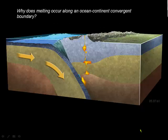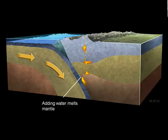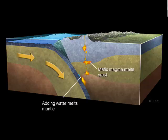Why does melting occur along an ocean-continental convergent boundary? Well, of course, same thing. You add water, water melts the mantle. Also, the mafic magma that comes out of the mantle is going to get underneath that crust and melt it. The result will be felsic and intermediate rocks.